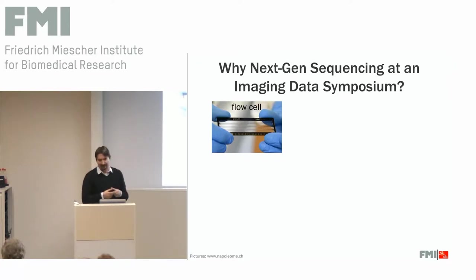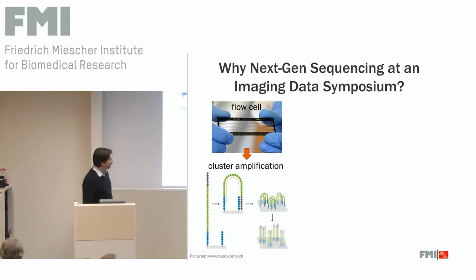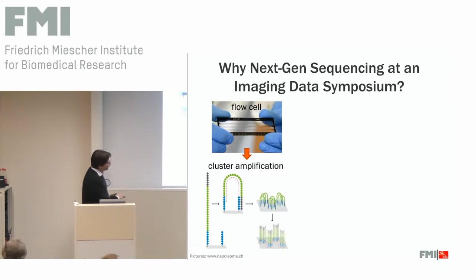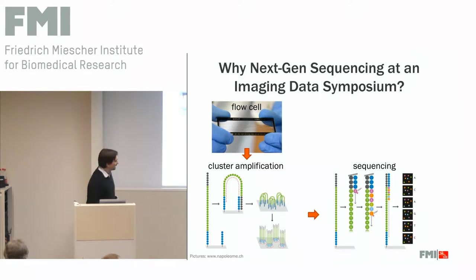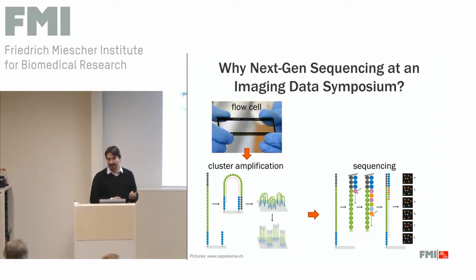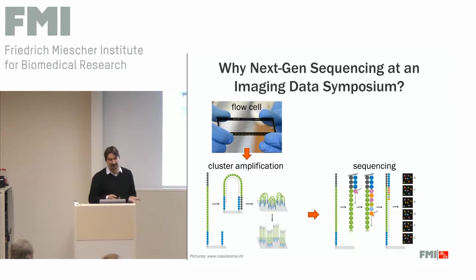The data is generated on small glass slides that could as well be microscopic slides. On these glass slides, we are growing small colonies of DNA molecules. Each of these clusters or colonies has about a thousand DNA molecules in it. They're grown starting from a single molecule in a process called bridged amplification, and in the end they're imaged in sequential cycles where the actual sequencing happens.